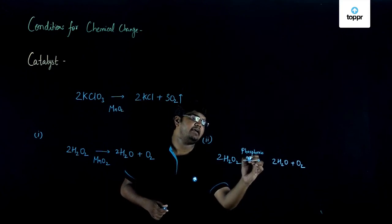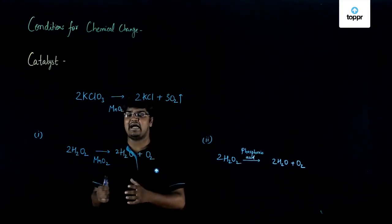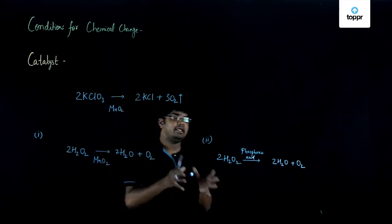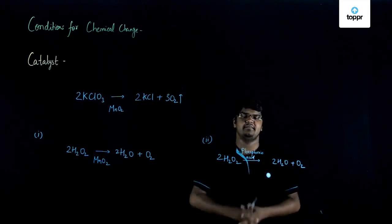So you can say that in the first case, MnO2 or manganese dioxide is acting as a catalytic promoter or positive catalyst, while the phosphoric acid is acting as a negative catalyst or catalytic inhibitor.